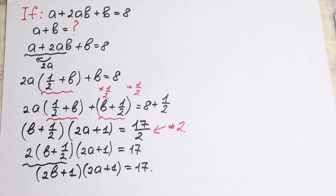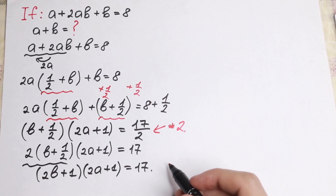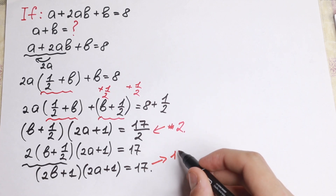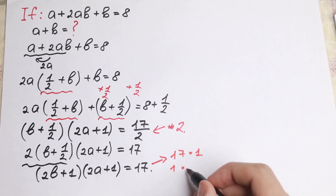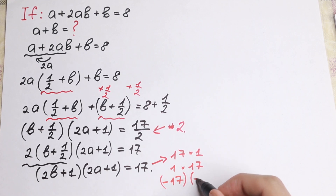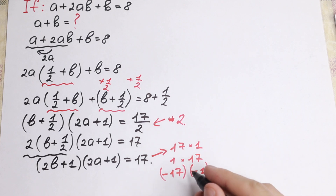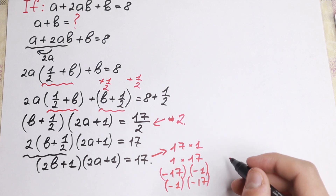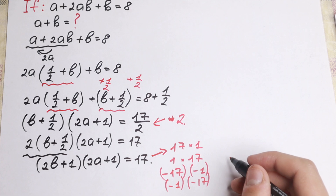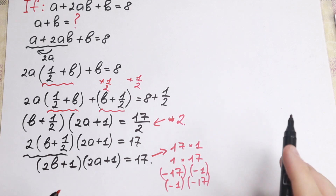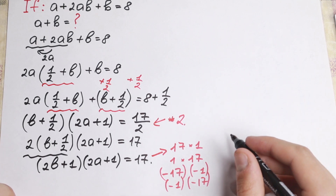Finally we have factored our expression: (2b plus 1)(2a plus 1) equals 17. As you know, 17 is a prime number, so it can only be divided by itself or by 1. So how can we express 17? First case: 17 times 1; second case: 1 times 17; and of course the negative forms: minus 17 times minus 1, and minus 1 times minus 17. So we have four cases, giving us a system of equations.